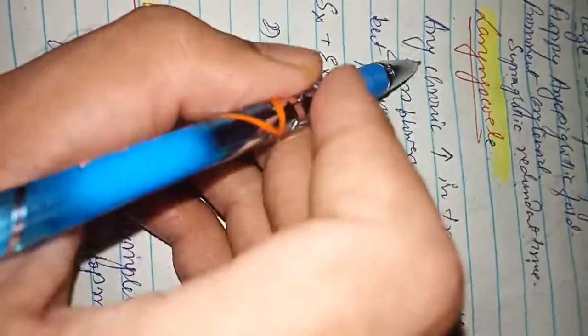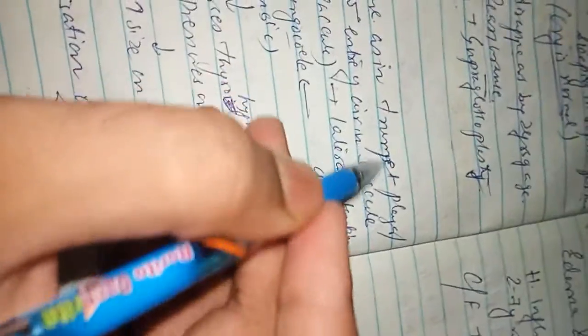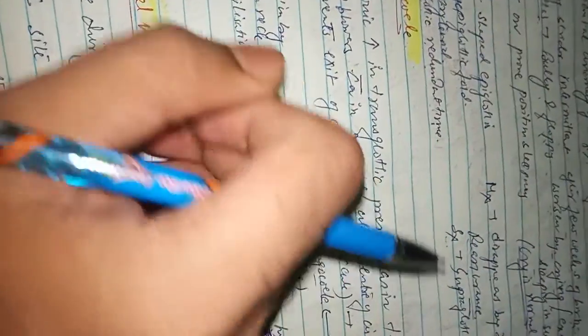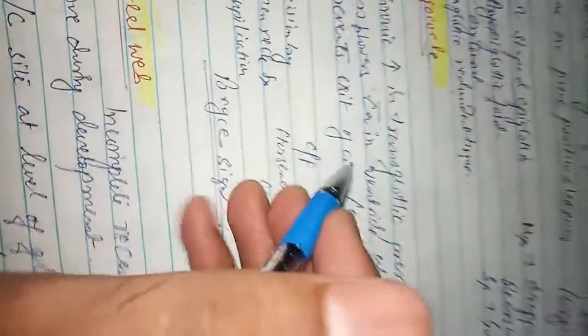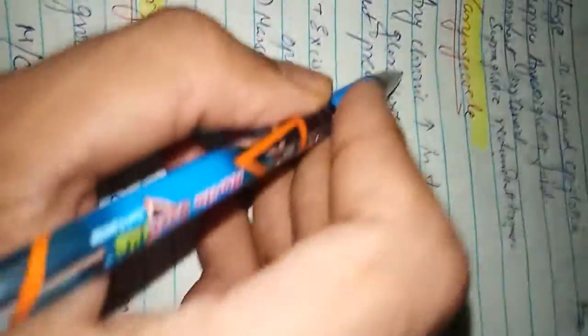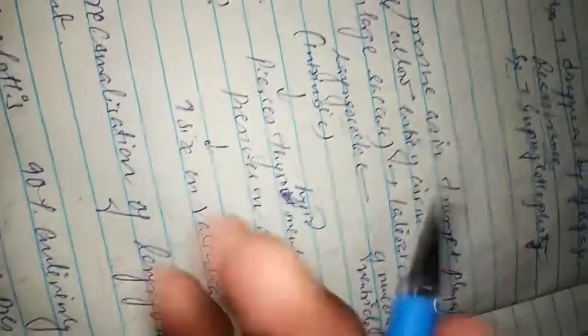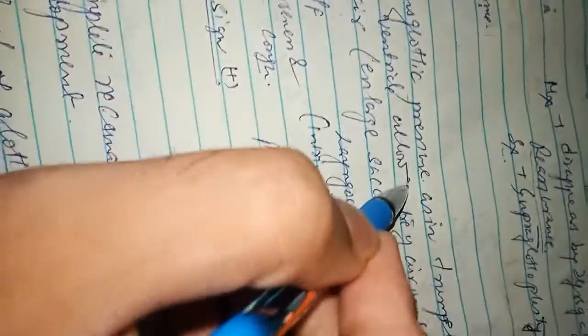Coming to laryngocele. Laryngocele is any chronic increase in transglottic pressure, as seen in trumpet players or glass blowers. They blow instruments and there is an increase in transglottic pressure. A chronic increase because they play several times, so there is a chronic increase in transglottic pressure.